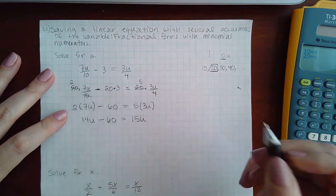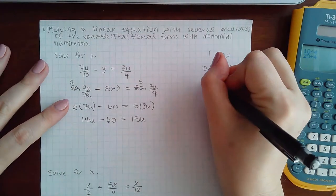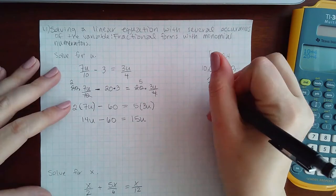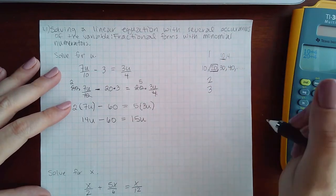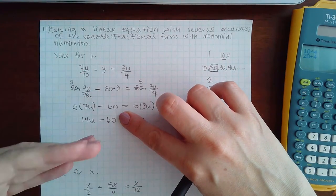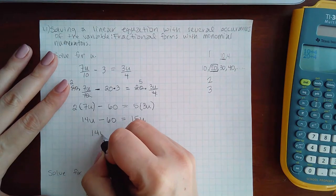So here I will get 14u minus 60. Come down, and here I will end up with 15u. Now I have successfully canceled out the denominators. I've also done step 2, which is to get rid of the parentheses by multiplying. Step 3 is to combine like terms on each side.